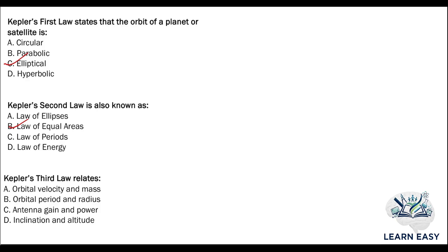Next question: Kepler's third law relates — option A: orbital velocity and mass; option B: orbital period and radius; option C: antenna gain and power; option D: inclination and altitude. Kepler's third law relates the orbital period and the radius, so the answer is option B.